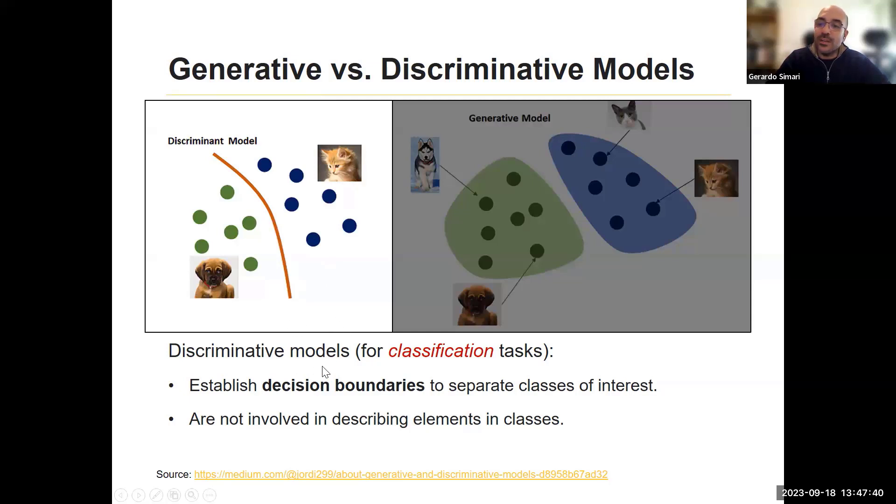The first one, discriminative models are the most common ones, at least in classification tasks. Discriminative models are pretty simple. They seek to establish what's called a decision boundary to separate classes of interest. So here we see green dots belonging to dogs, blue dots belonging to cats. They're not involved, they don't seek to actually describe the elements or the classes themselves. They just say from this point on, over to that side of the space you have class A, and on the other side you have class B. So to discriminate between two or more classes.